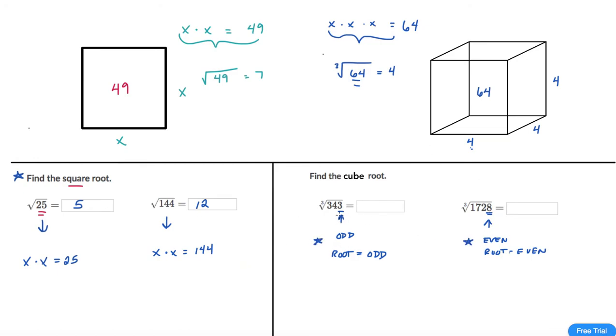So in jumping over to cube roots we're trying to think what number times itself three times will get us to 343. And having a little bit of background knowledge is really helpful here. Like for instance I know that 5 cubed is 125 and that's an odd number and that's too low. So it can't be 5. And my next guess should be to go to the next highest odd number. So I'm going to try 7.